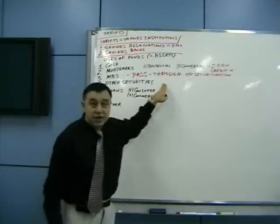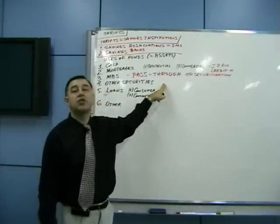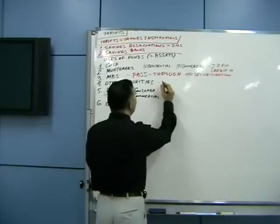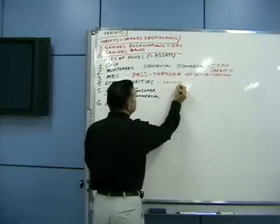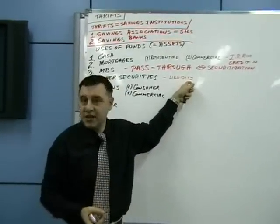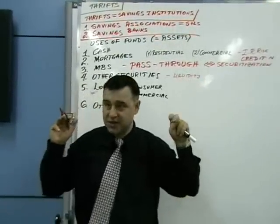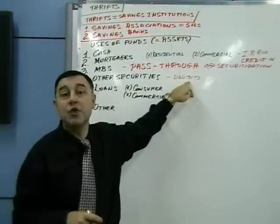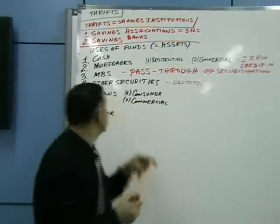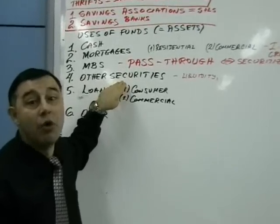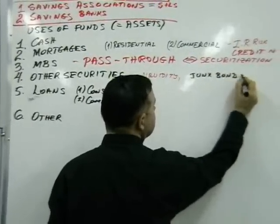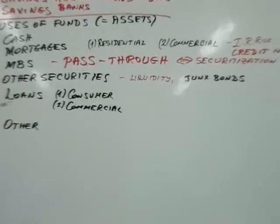Other securities include treasury bills, treasury notes, and treasury bonds. They will also use some corporate bonds, mostly for liquidity purposes — investing in highly liquid securities not for earnings themselves but for the ability to sell them quickly when liquidity is needed, usually for redemption. They also got involved in junk bonds, which will be explained more later.